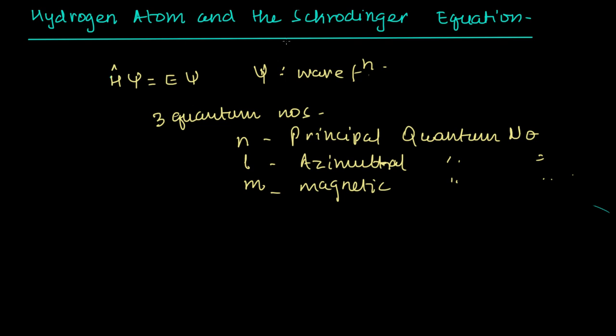If psi is, psi as we had said is the wave function, psi is nothing but the wave function, and E is the energy. E is the energy of the electron.